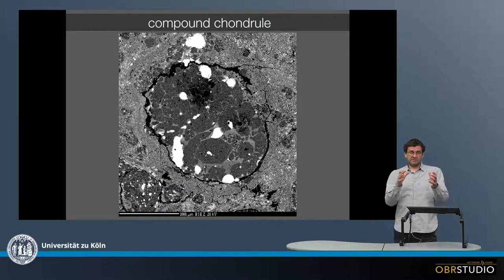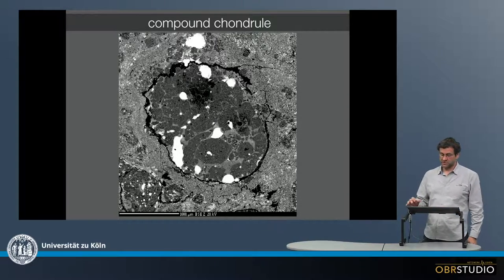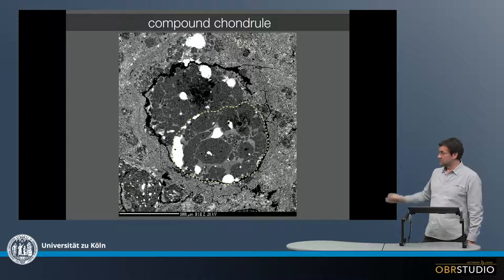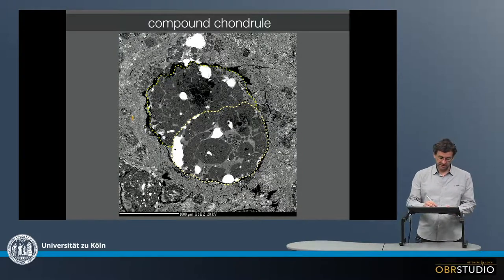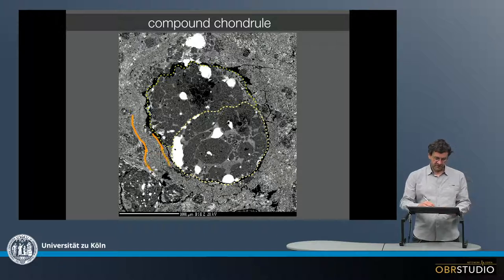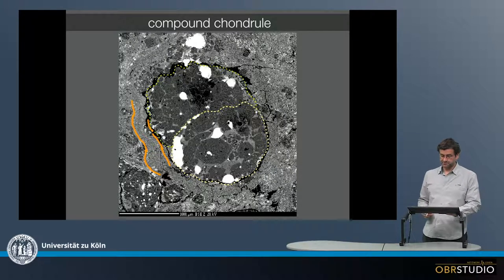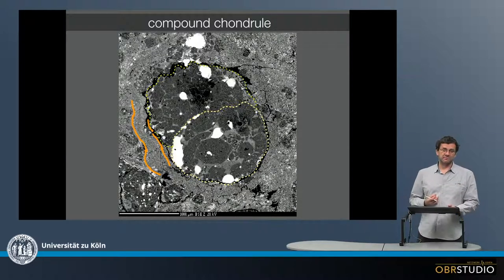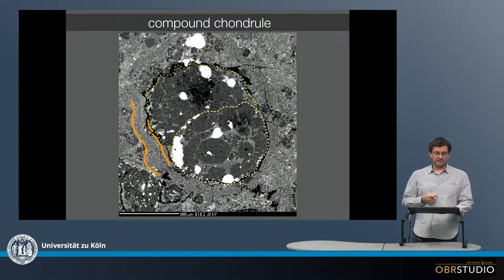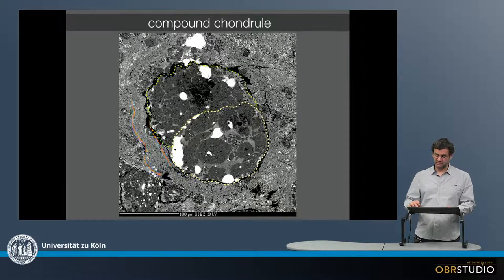It is also possible that chondrules might collide with each other and fuse together, forming compound chondrules. You can see a yellow chondrule and a green chondrule that collided and fused together, building this compound chondrule, with possibly a dust rim around it. These compound chondrules are quite important, as they can be used to determine chondrule density in a reservoir, and there might be some two to three percent of these compound chondrules.